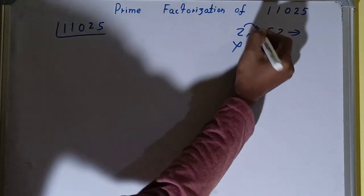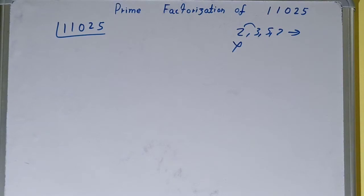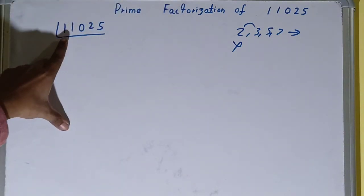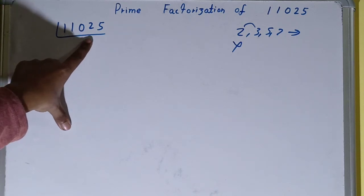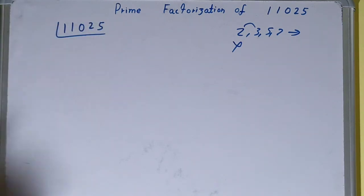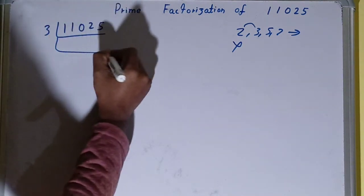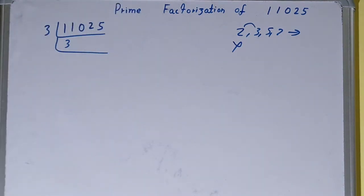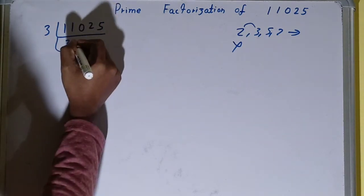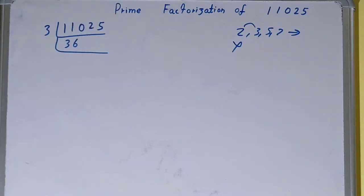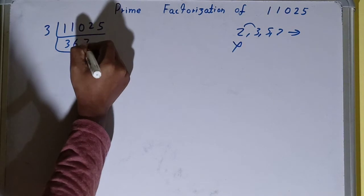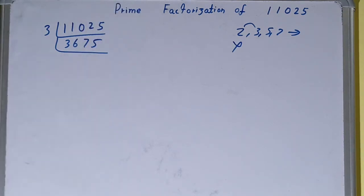So we'll be going to the next lowest prime number, that is 3. Now is this number divisible by 3? We need to check. 3 threes are 9, 2, 0, 3 sixes are 18, 2, 2, 3 sevens is 21, 1, 5. Yes, it is divisible, so divide it. 3 threes are 9, 2, 0, 3 sixes are 18, 2, 2, 3 sevens is 21, 1, 5, 3 fives is 15. So you will be getting 3675.